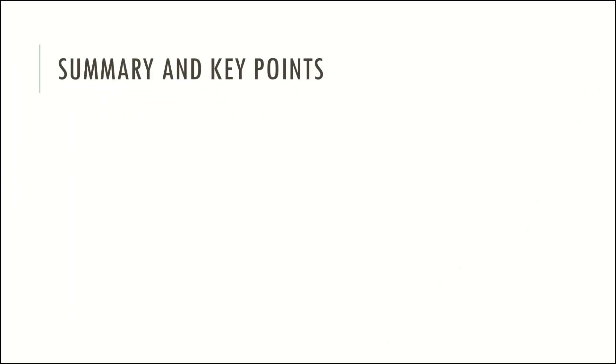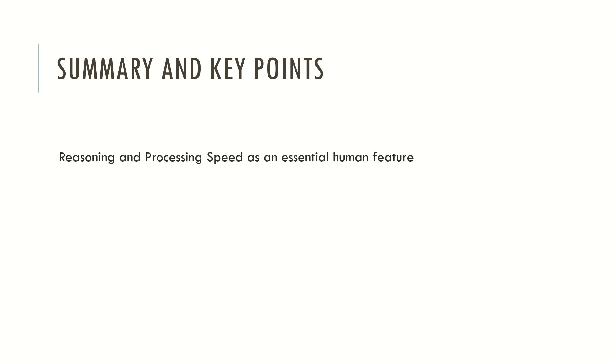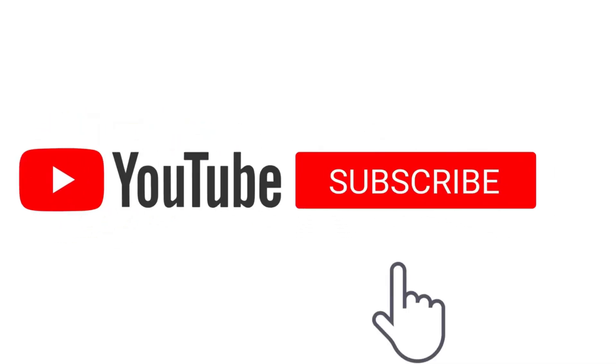Now let's see the summary and key points. We saw that reasoning and processing speed are essential human features. Both are required to process mental contents and for normal human functioning in everyday life. And we saw that reasoning is also associated with the frontal lobe. Don't forget to see the video description regarding today's theme if you want to see the manuals and books that I recommend. If you like what I'm doing, please consider subscribing and hitting the bell for notifications. You can use the comment section below to express your thoughts. Welcome to MindBrainTalks and I hope to see you in the next video. Bye!